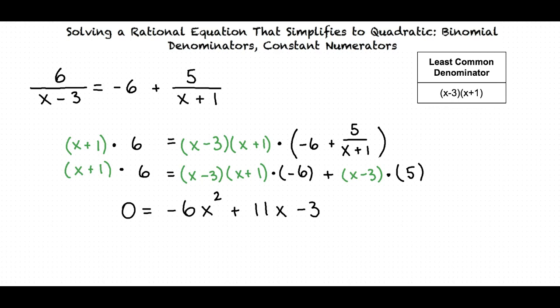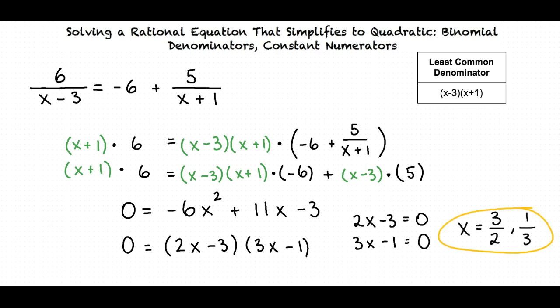The expression negative 6x squared plus 11x minus 3 factors into the quantities 2x minus 3 and 3x minus 1. And finally, we set each of these quantities equal to 0. Our final answer is x equals 3 halves and 1 third.